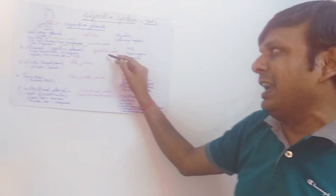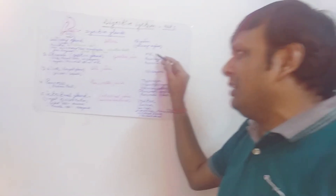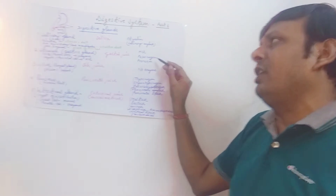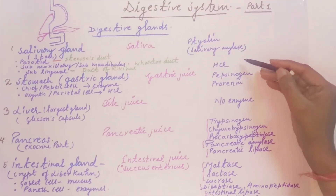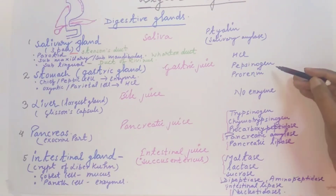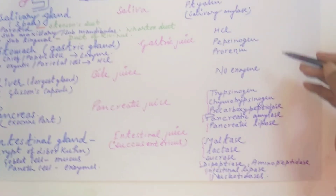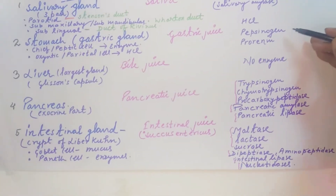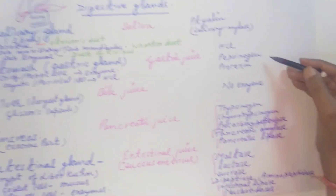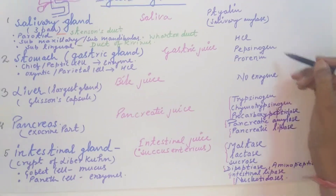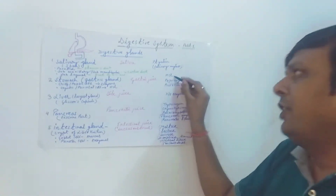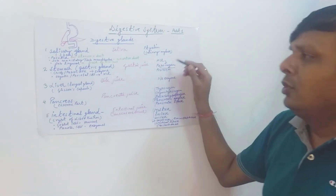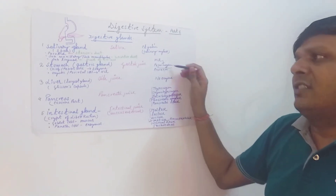The main function of the gastric gland is to secrete gastric juice, which contains HCl and very important inactive enzymes known as pepsinogen and prorennin. These inactive enzymes are mainly activated by HCl. Pepsinogen is converted into pepsin by the effect of HCl. Protein digestion generally starts in the stomach by the effect of pepsin.